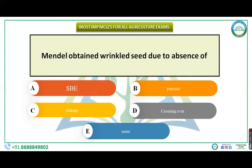Mendel obtained wrinkled seeds due to the absence of which factor? Options: SBE (starch branching enzyme), PEP case, linkage, crossing over, or none. The reason behind obtaining wrinkled seeds was the absence of starch branching enzyme (SBE). The correct answer is starch branching enzyme.